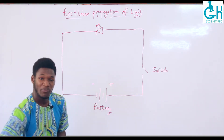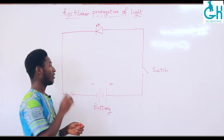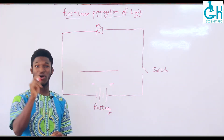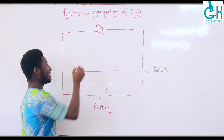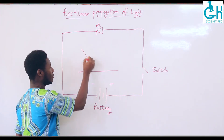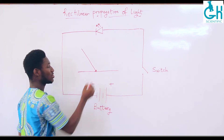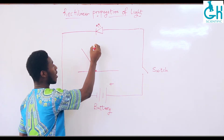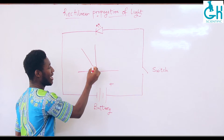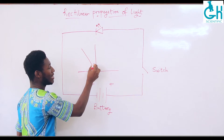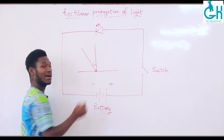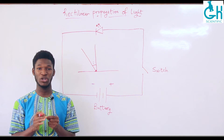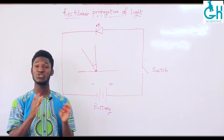Let me give you an example. Take a very plain surface — you have a ray of light that is incident on this surface. Just as you're very familiar with, we draw the normal to the surface, and this angle here becomes the angle of incidence.